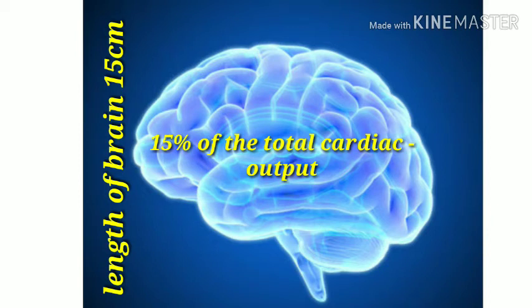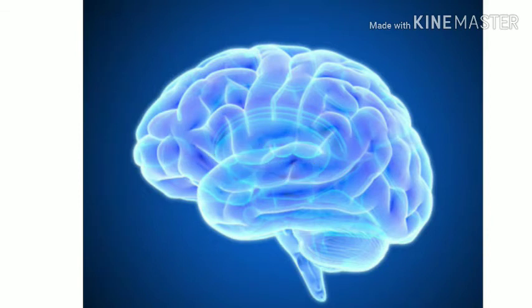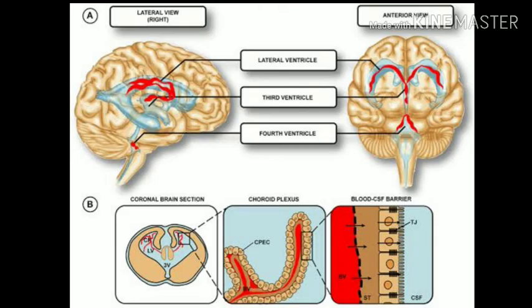From this you get three key points: weight of brain is 1400 grams, height of brain is 15 centimeters, percentage of cardiac output is 15%, and the total amount of blood received by the brain per minute is 750 ml.